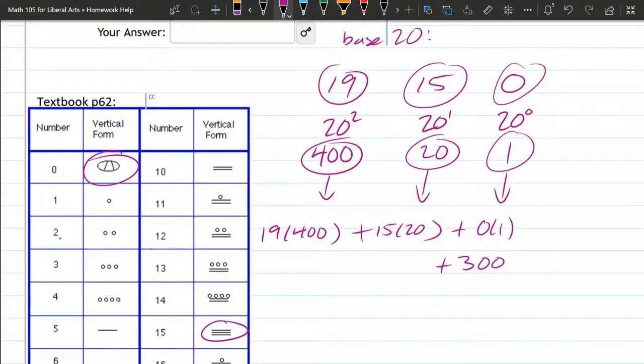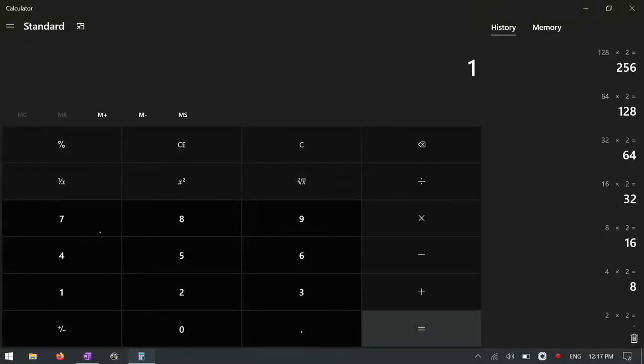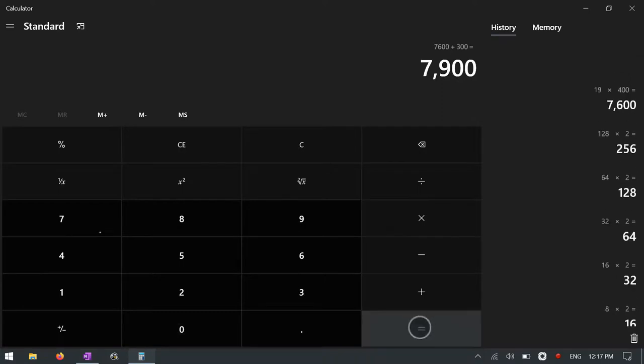Let's go to the calculator to be safe. We got 19 times 400 plus that 300 left over: 7900.